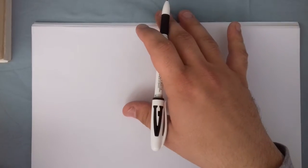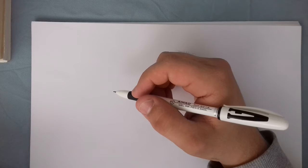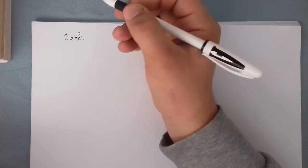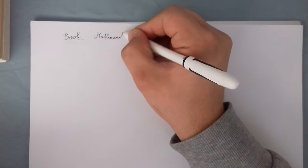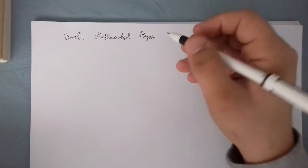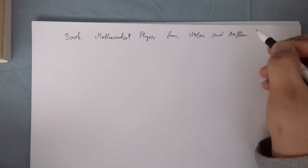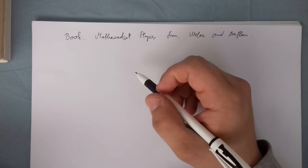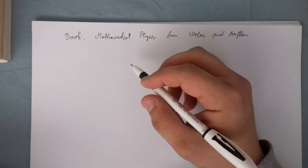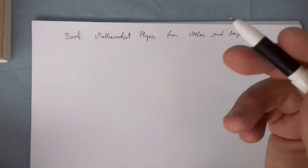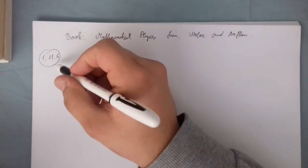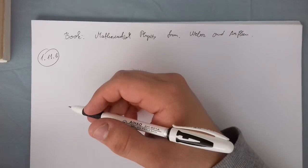Hi everyone. Today I'm going to do a video on one of the problems in electrodynamics. I chose this problem from a book called Mathematical Physics by Weber and RFK. The problem is related to electrodynamics and the problem number is 1.11.6.